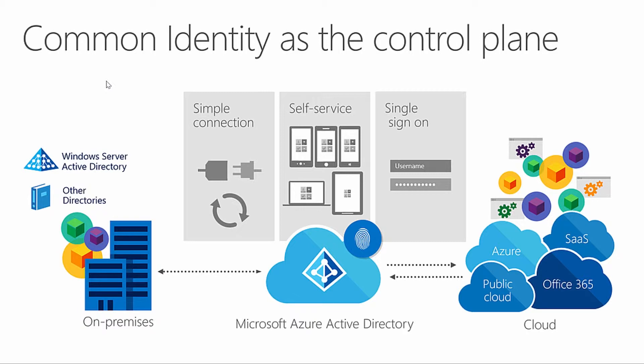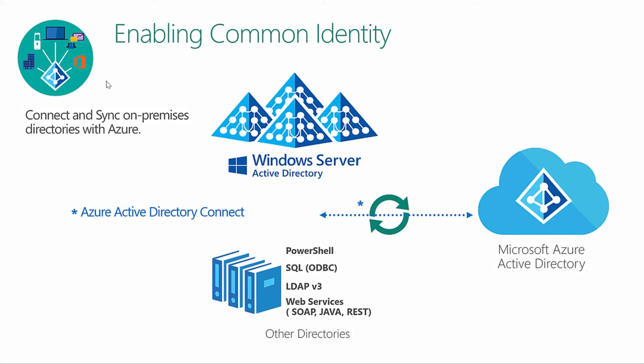Enabling a common identity can be done easily with Microsoft's Azure Active Directory Connect. This used to be done with Directory Sync for Office 365, part of Forefront Identity Manager. Microsoft has moved that engine into a separate sync tool called Azure AD Connect, which now supports automatically provisioning ADFS servers and syncing all attributes up to Azure Active Directory. It can import data from PowerShell, LDAP, SQL, or various web services and APIs.